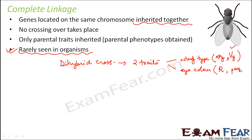Similarly, for eye color: red is denoted by capital R and purple by small r. In this case, capital R and vestigial wing (vg) are completely linked to each other.